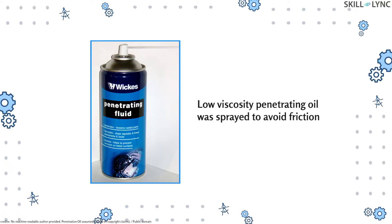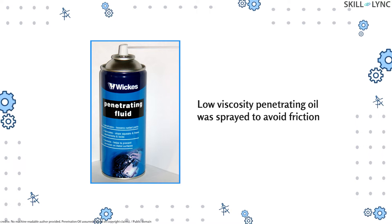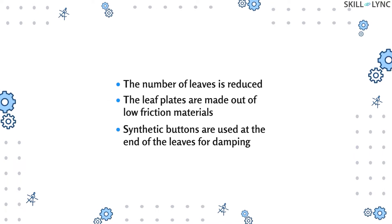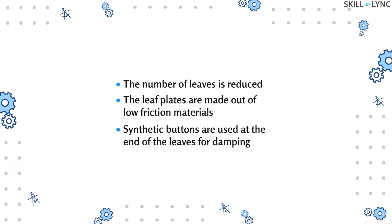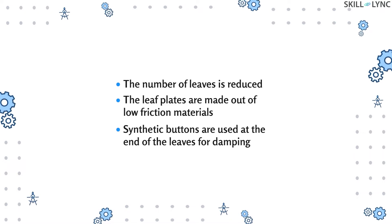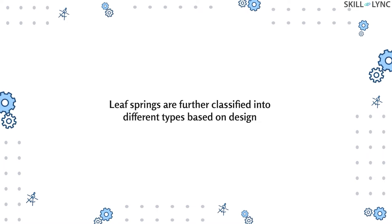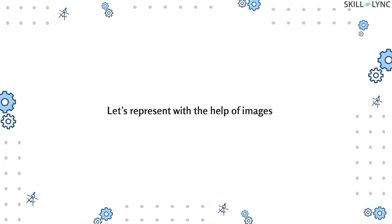In older models, low viscosity penetrating oil was sprayed to avoid friction. New models have features that eliminate the need for periodic maintenance — the number of leaves has been reduced and the leaf plates are made out of low friction materials. They also use synthetic buttons at the end of the leaves which reduce friction.